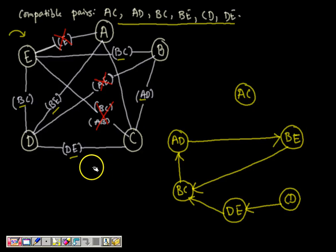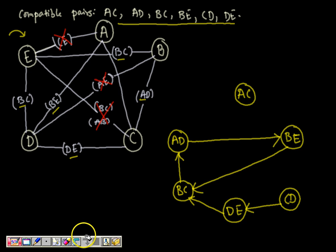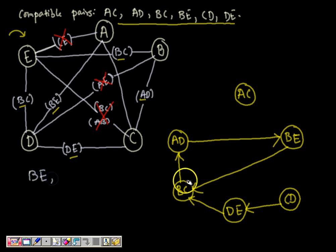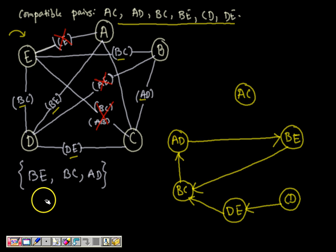Now we need to understand the closed sub-graph of this compatibility graph. A set of compatibles for any machine is said to be closed if, for every compatible contained in the set, all its implied compatibles are also contained in that set. For example, if we take BE, it has an outgoing arc to BC, so we need to take BC along with this set. BC has an implied pair AD, so AD also has to be taken in the same set.